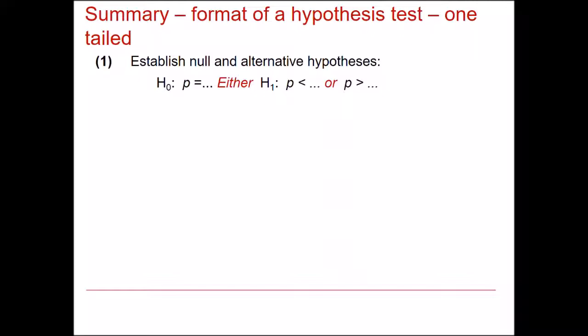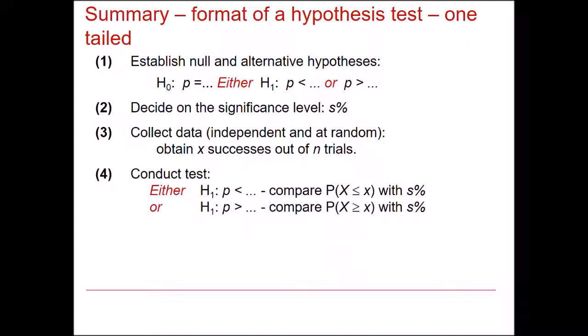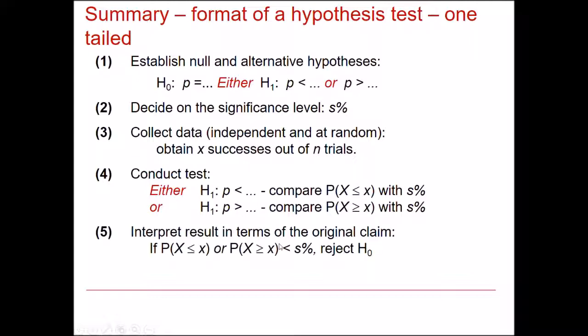Decide on the significance level. As we said before, that's normally 5%, but it could also be other values. Carry out your experiment. So collect data and obtain how many successes you've got out of N trials. Then perform the hypothesis test and compare the probability of getting either less than or equal to whatever you've found, X successes, with your significance level or greater than that same number of successes with the significance level if the alternative hypothesis is greater than. If that probability ends up being less than the significance value, you reject H0. In all other circumstances, you would accept H0.